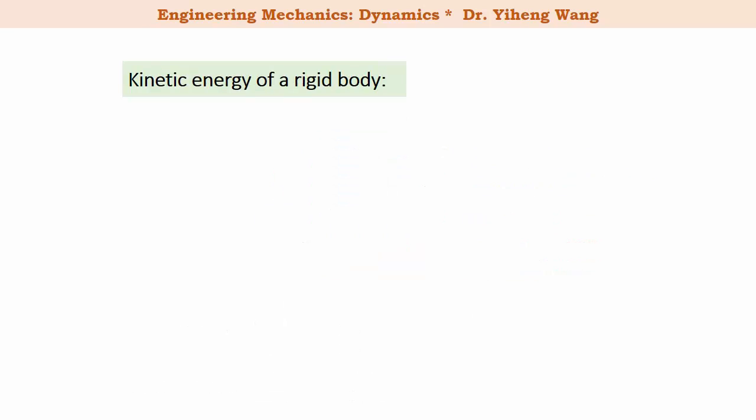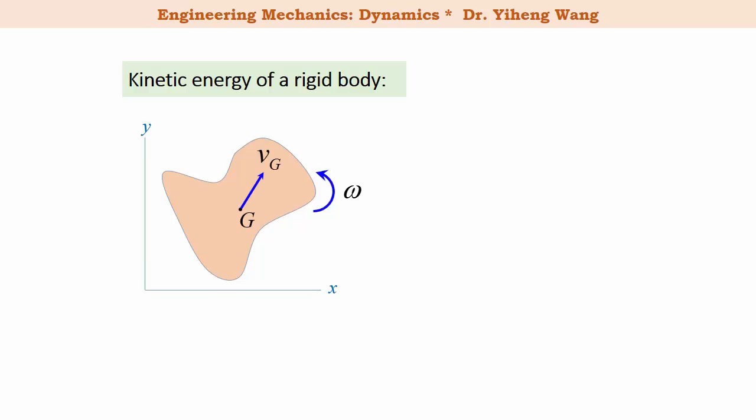Now let's look at the kinetic energy of a rigid body. For a rigid body undergoing planar motion, it will have an angular velocity, and every point will have a different linear velocity, but we can always find the linear velocity of its gravitational center, point G. Therefore, the kinetic energy is defined as one-half m vG squared plus one-half IG omega squared. Here m is the mass, vG is the linear velocity of the gravitational center, IG is the mass moment of inertia about an axis through G perpendicular to the plane, and omega is the angular velocity.